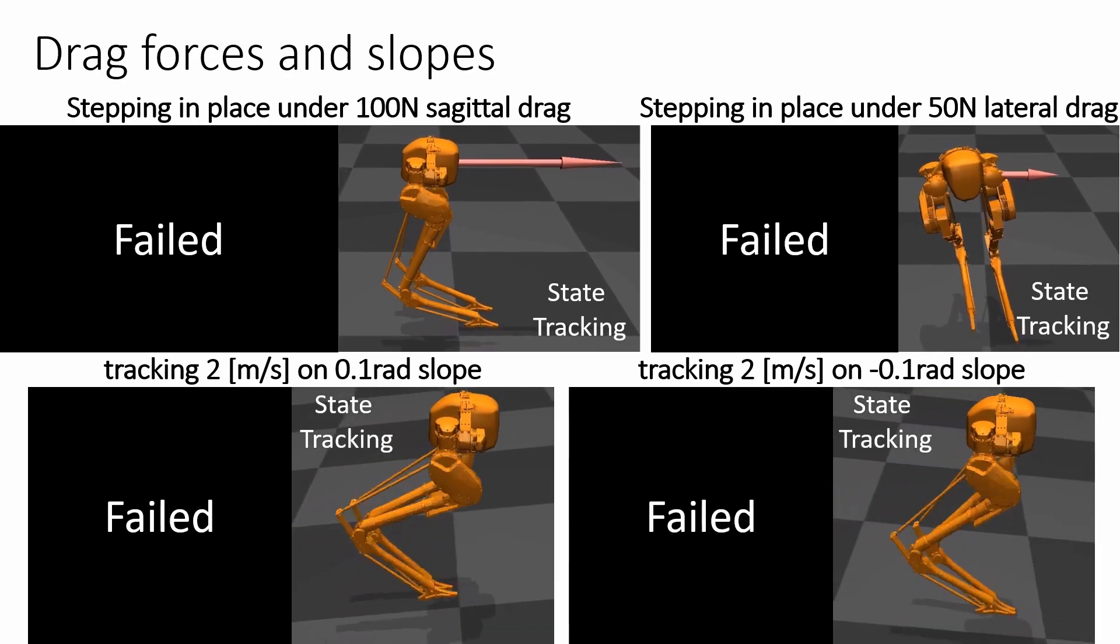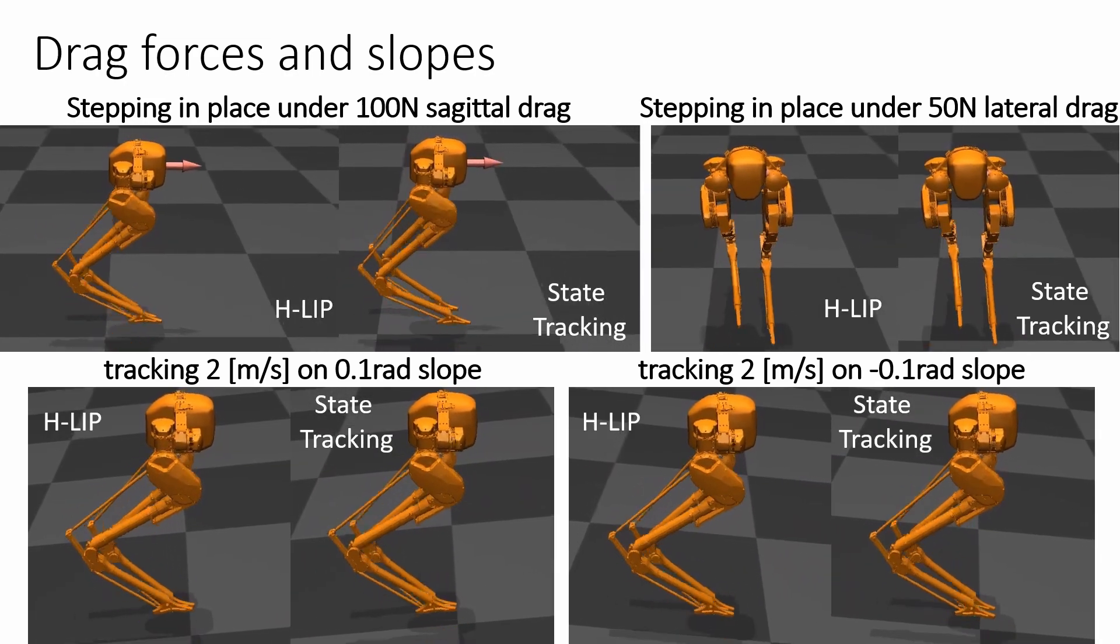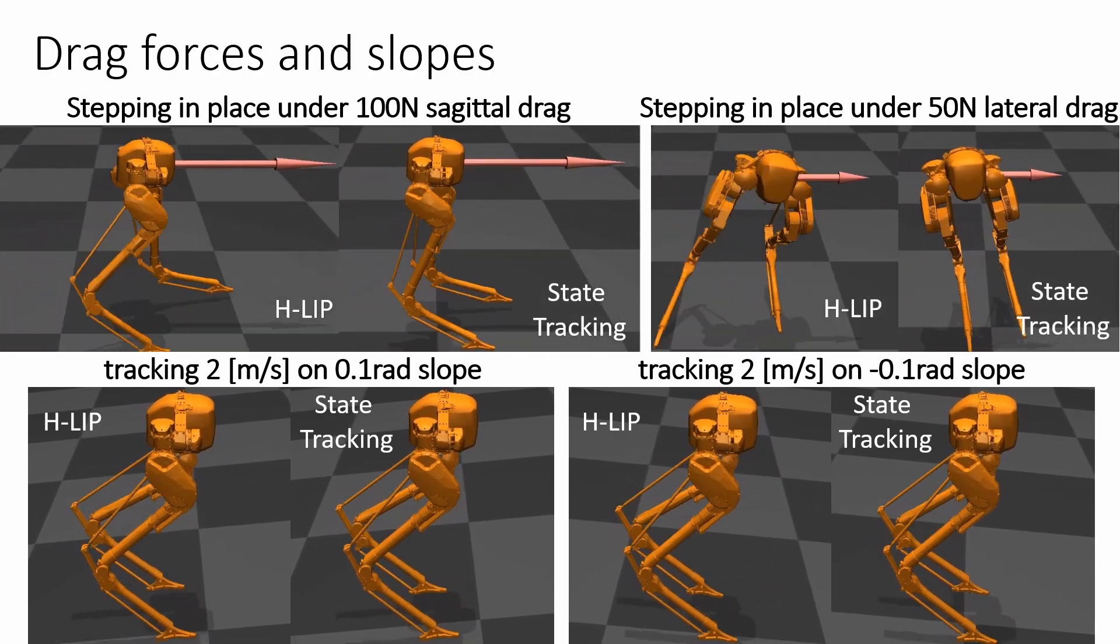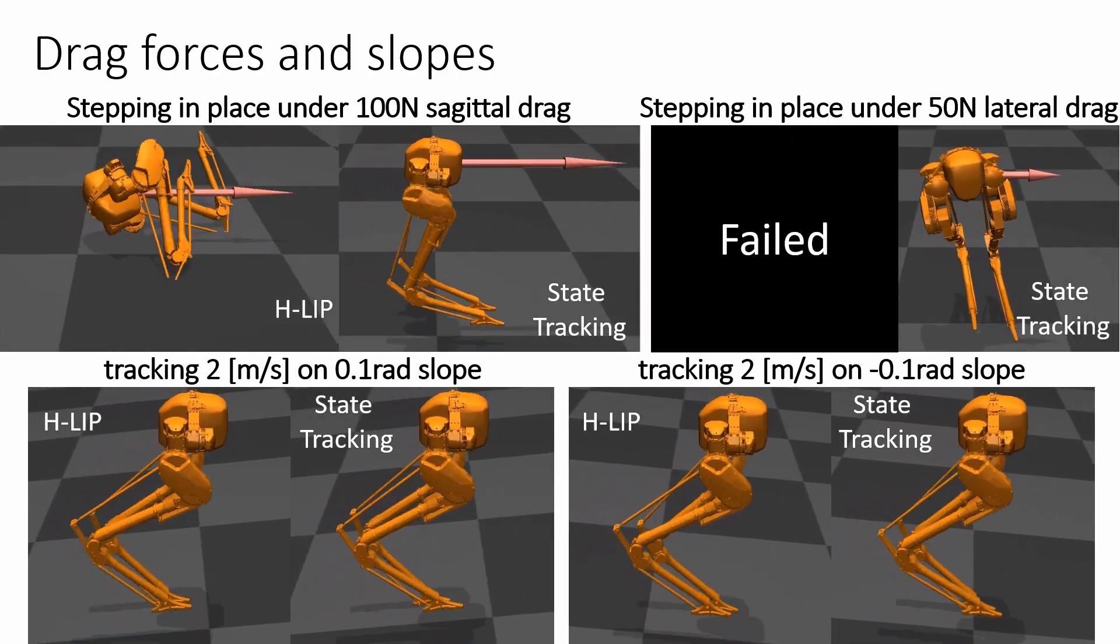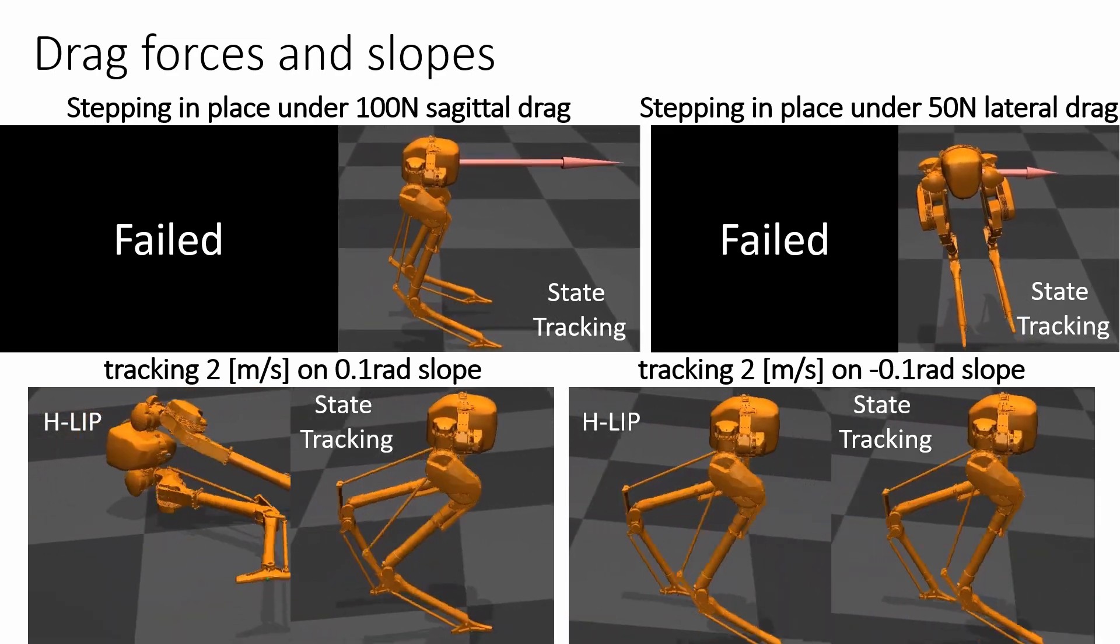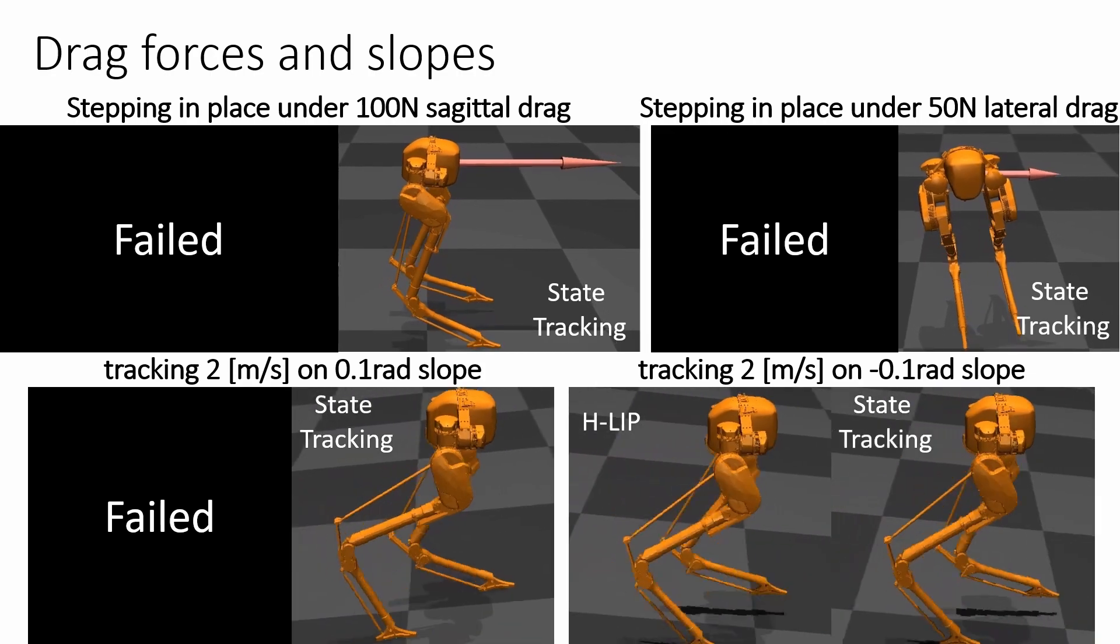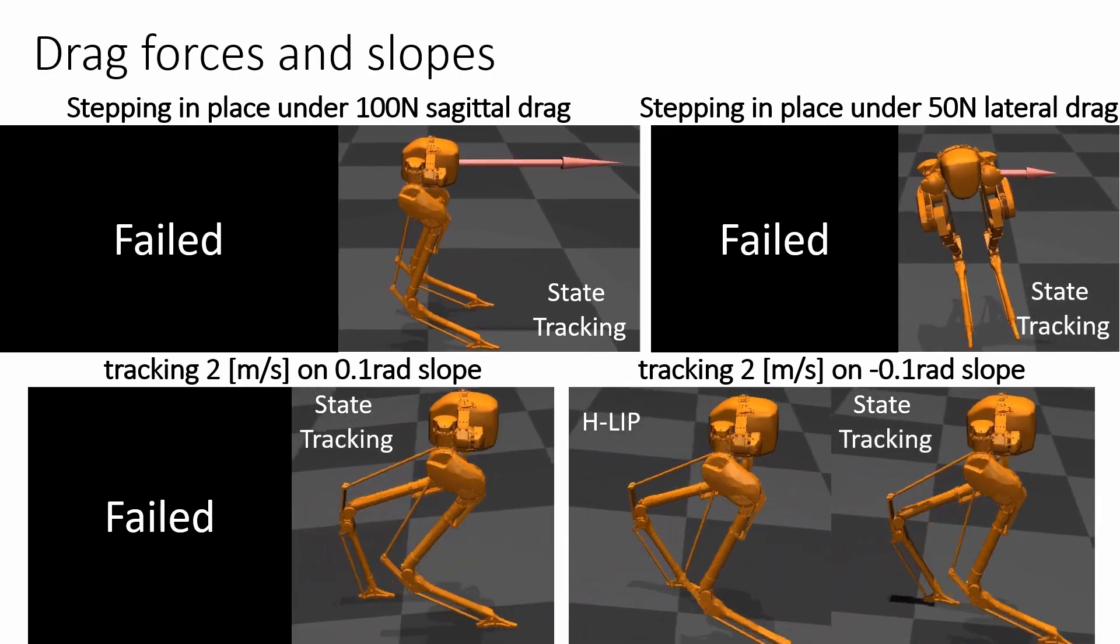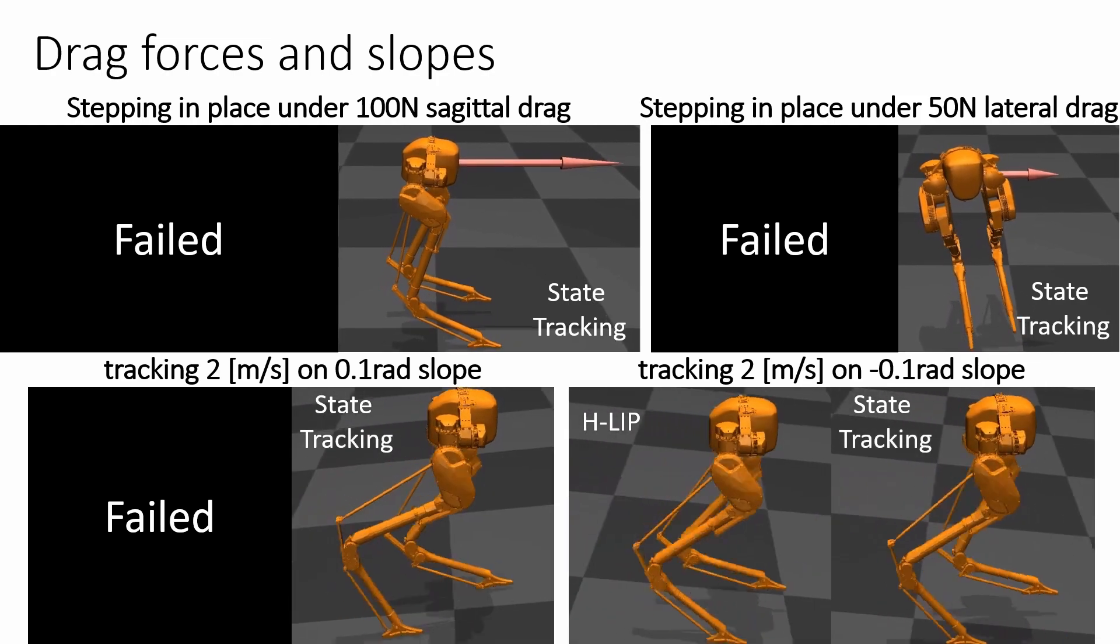Finally, we test our methods against unknown slopes, which corresponds to early and late impacts. In fact, the error of impact time is positively correlated to the commanded step size. This results in the failure of the nominal HLIP controller for dynamic walking at high speed, whereas our data-driven formulation adapts to the change and successfully tracks the desired velocity.